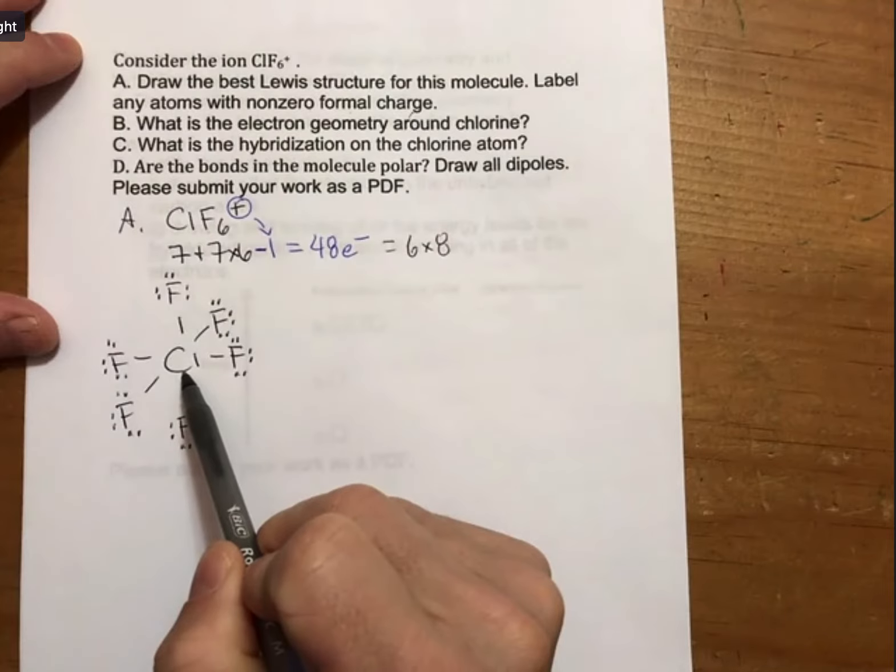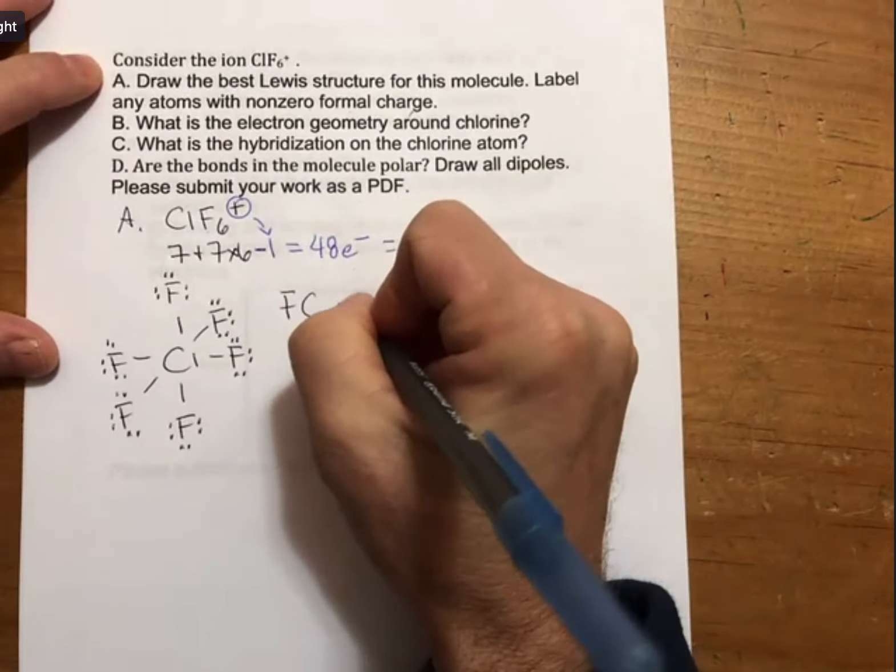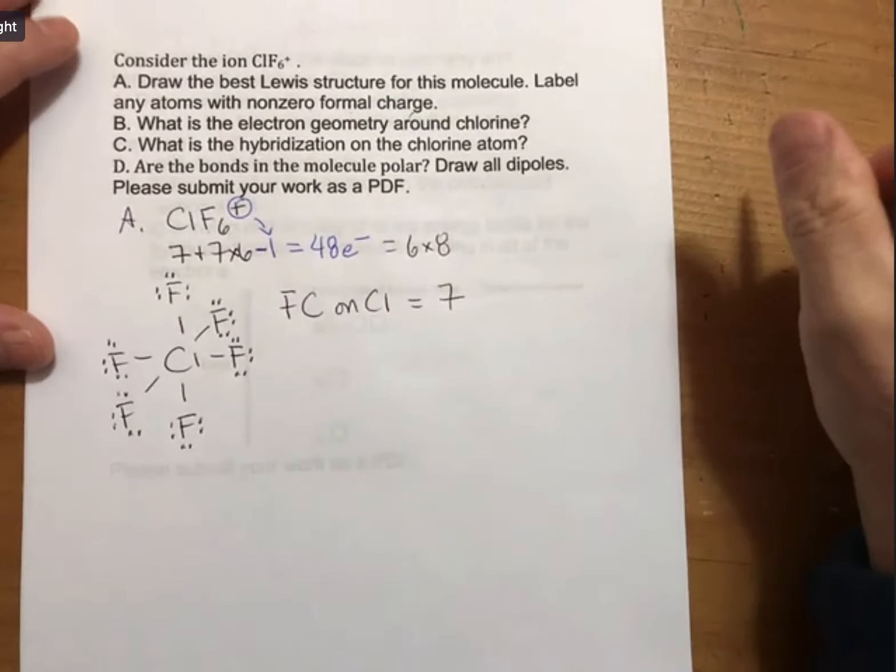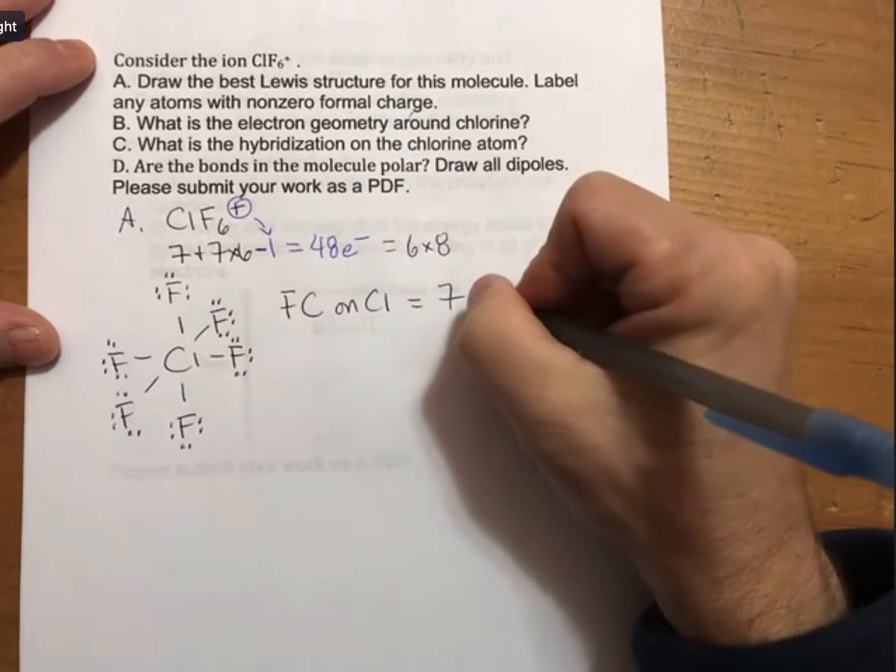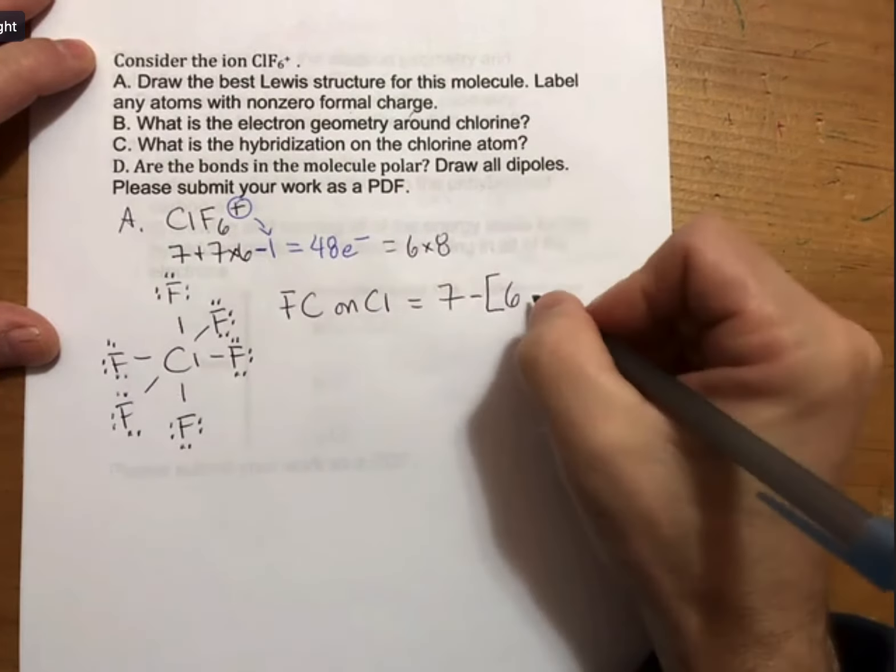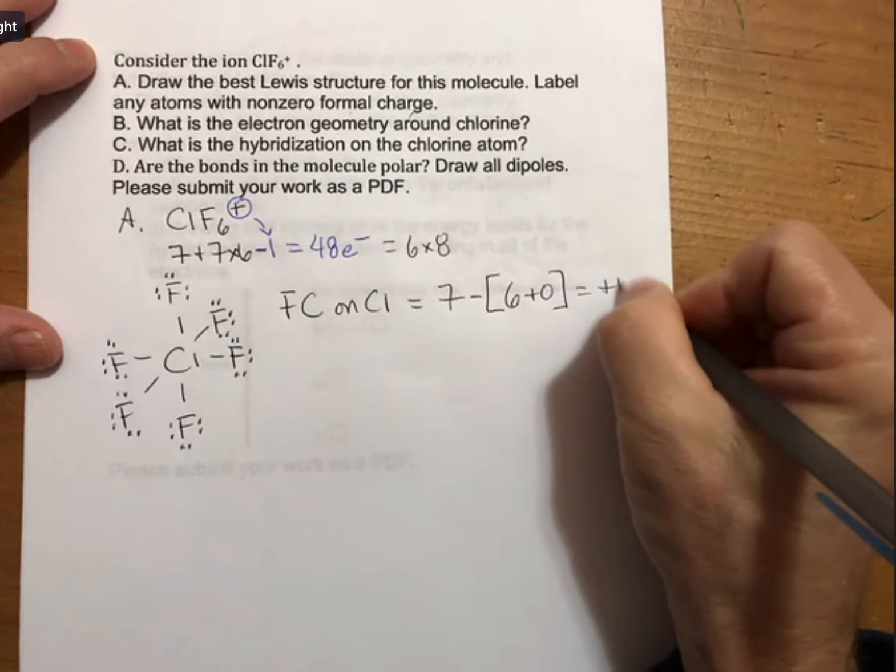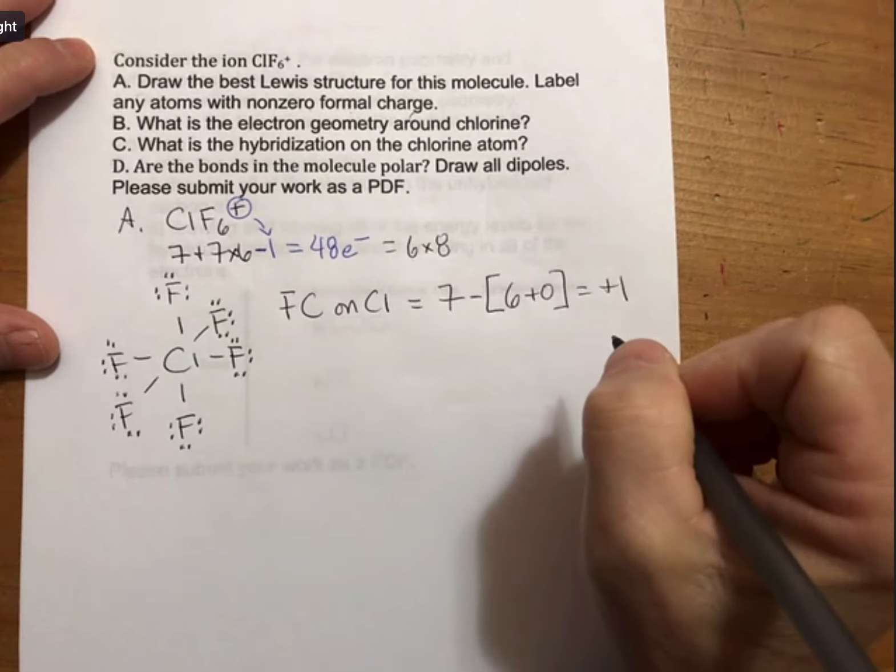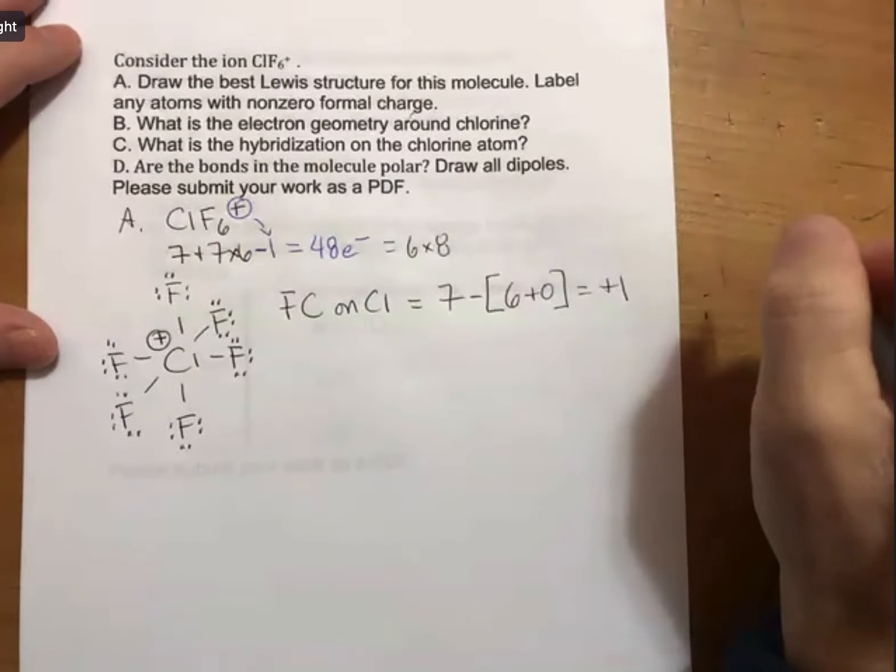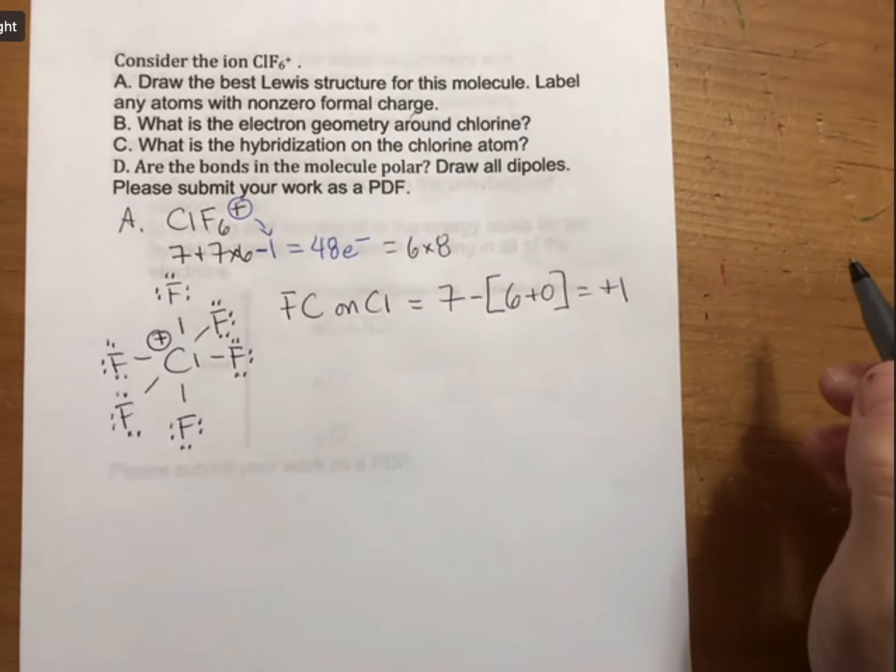If we look at the chlorine, we know that chlorine has 7 valence electrons from the periodic table. It has 6 bonds and no unshared electrons. So we end up with a plus 1 for chlorine. So you can put the plus formal charge on the chlorine. Or you can do the formal charge analysis. Either way is fine.